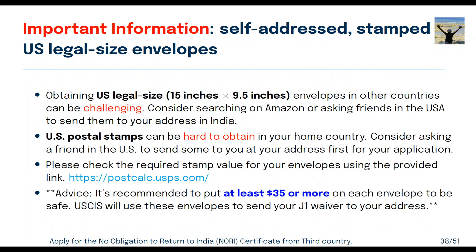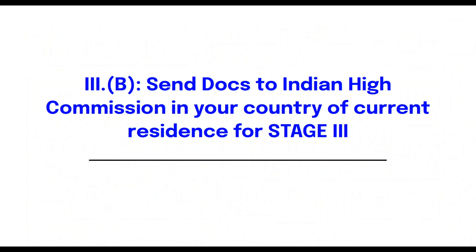For US postal stamps on the self-addressed envelopes, if you are staying in the USA, buy around 100 to 120 dollars worth of postal stamps and keep them. You can also sometimes find US postal stamps on Amazon. I suggest putting at least 35 to 45 dollars of postage on each envelope, since you will receive a one-page waiver certificate or notice document back. Then send the documents to the Indian High Commission in your country of current residence for Stage 3.